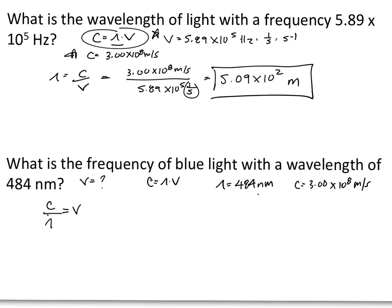Before we plug in, we always want to be looking at our units. In this context, your wavelength has its units in nanometers while the speed of light is in meters. So we're going to need to change this into meters. What's the relationship between nanometers and meters?